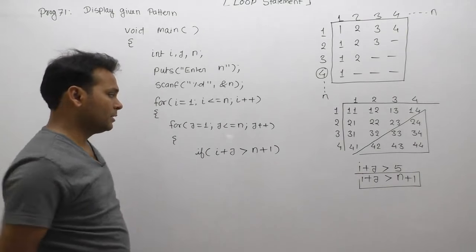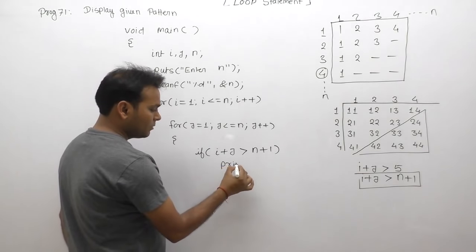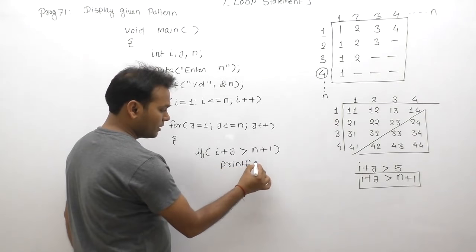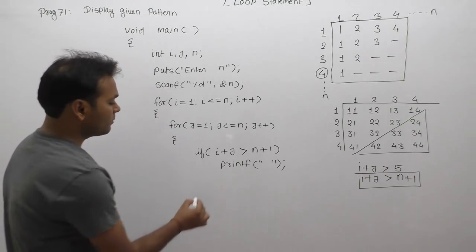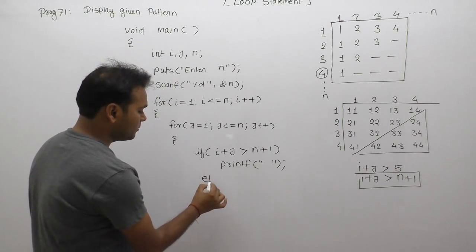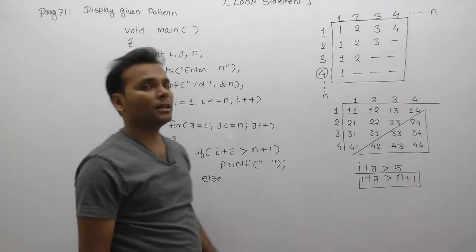If the condition is true, then we print only space. But when this condition becomes false, in the previous case we directly displayed the value every time.